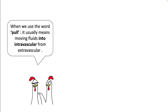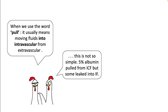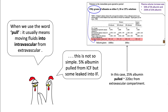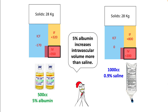The word 'pull' is a little confusing when used with albumin because fluid movements are much more complex. For example, looking at the Lemke et al study: when you gave 200 cc of 25% albumin, you had an extra 220 cc enter your intravascular compartment from the extravascular space. However, when you used 1000 cc of 5% albumin, around 500 cc leaked out and only 500 cc stayed intravascular. So overall, 5% albumin increases intravascular volume more than saline.